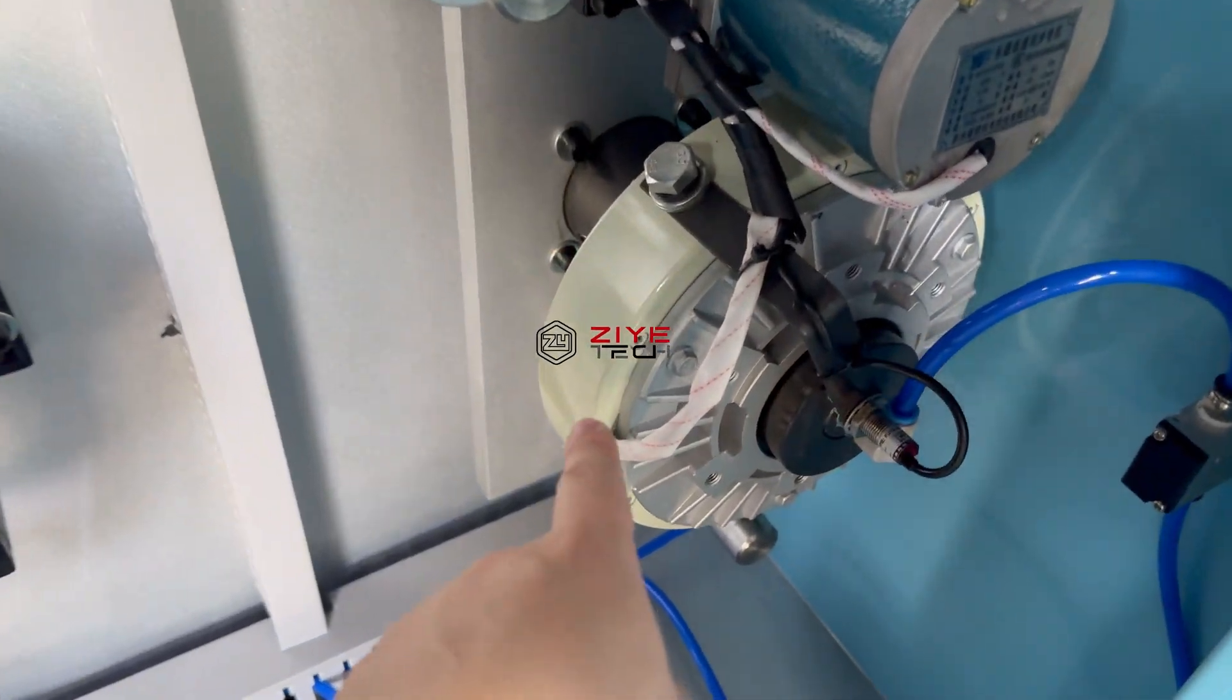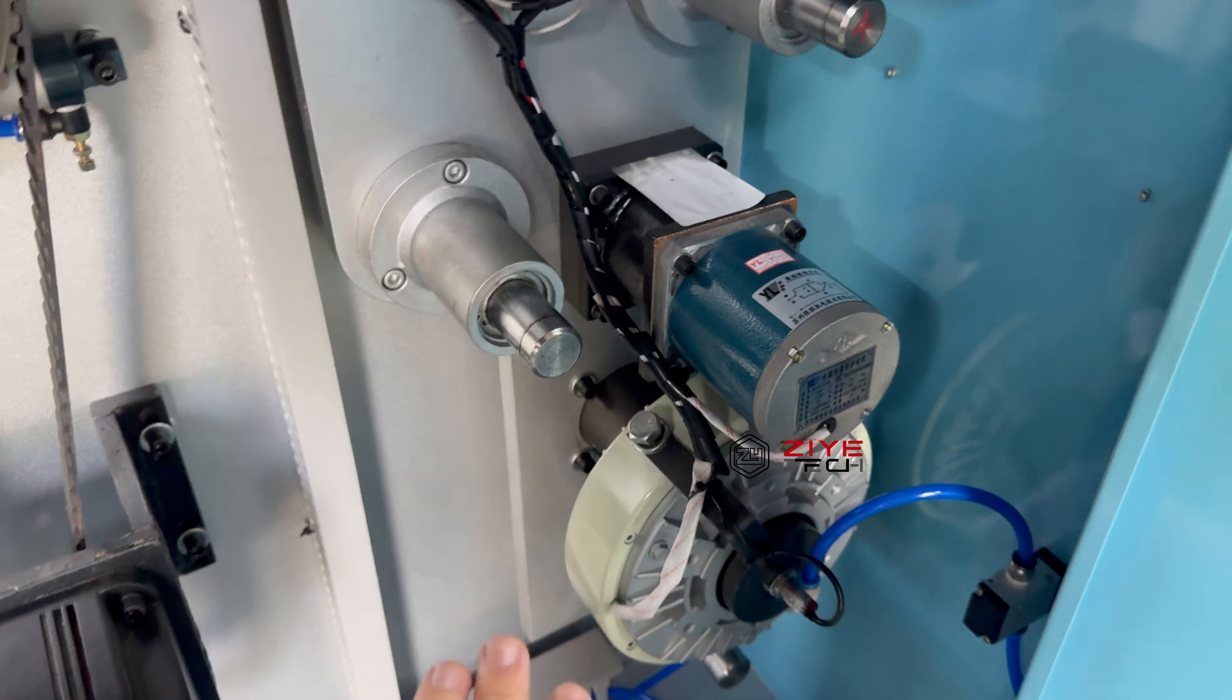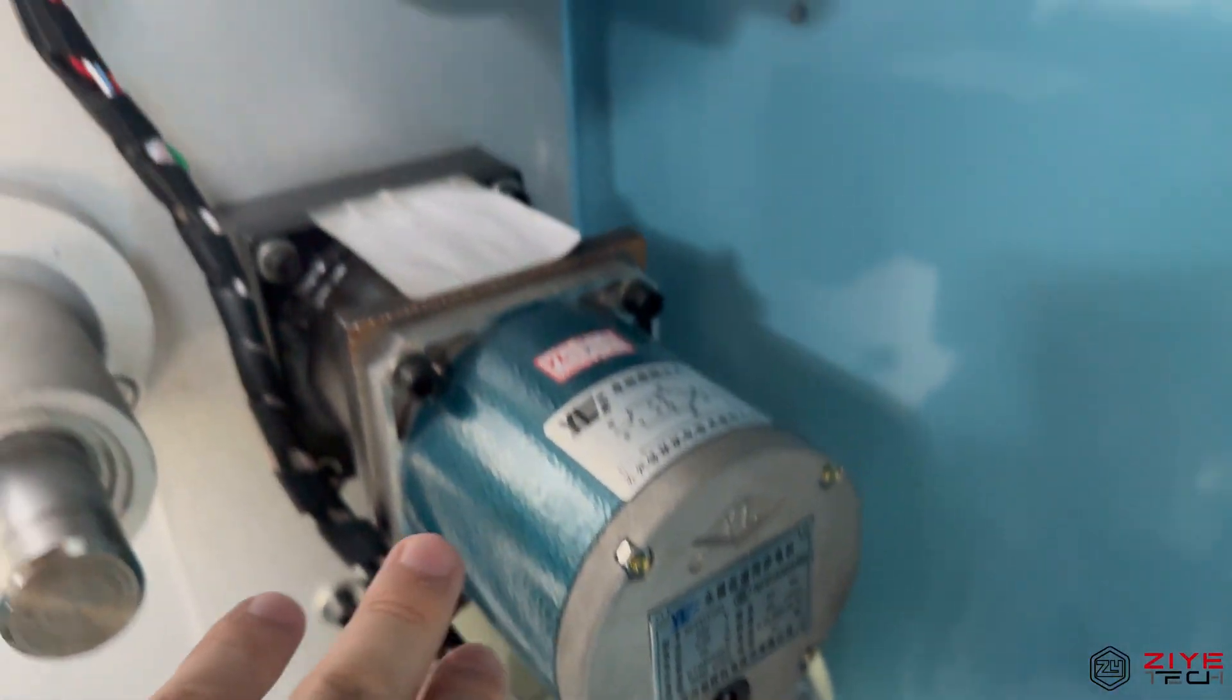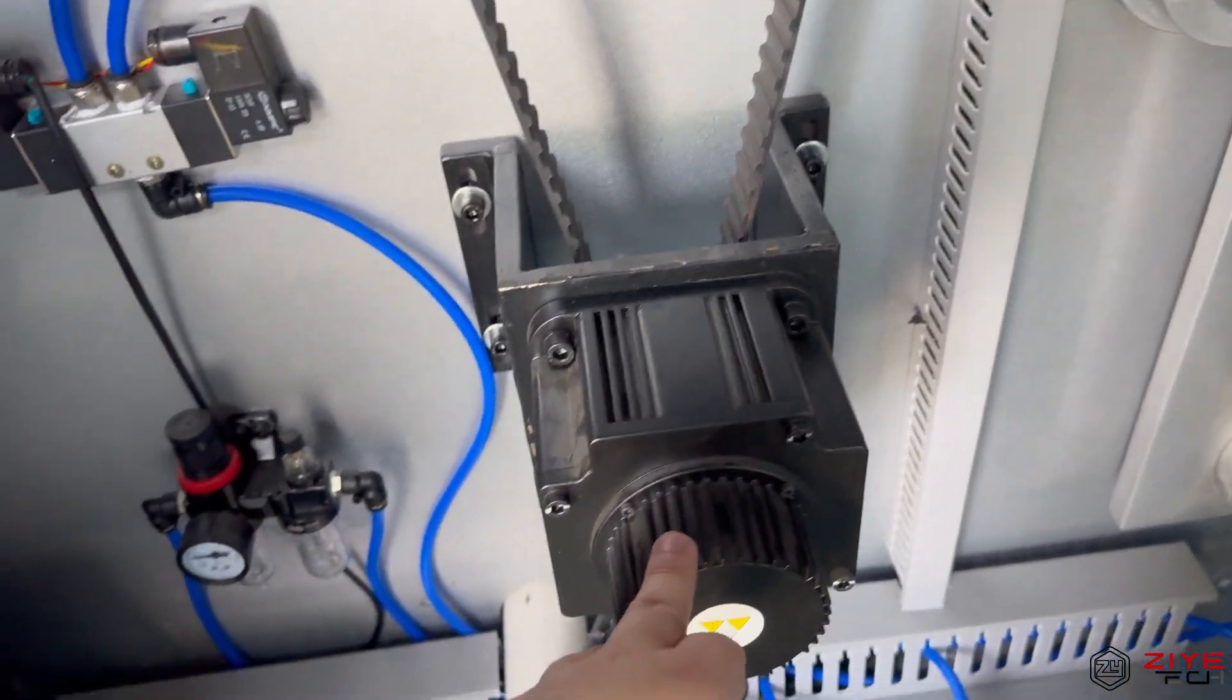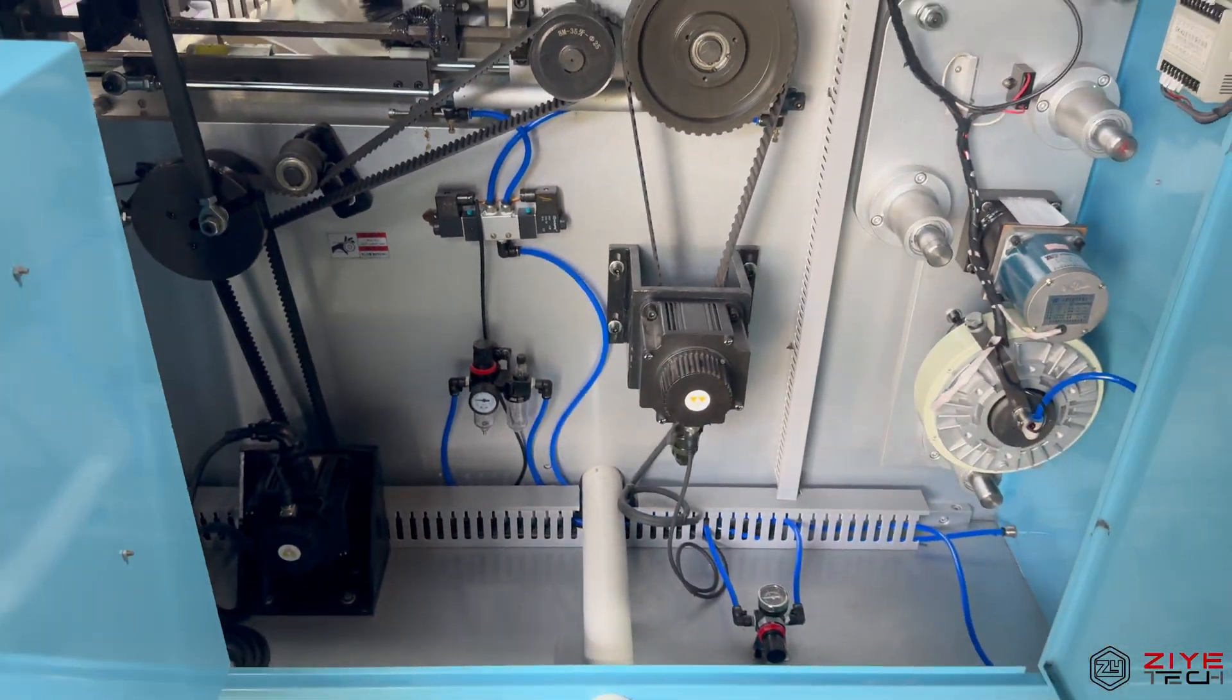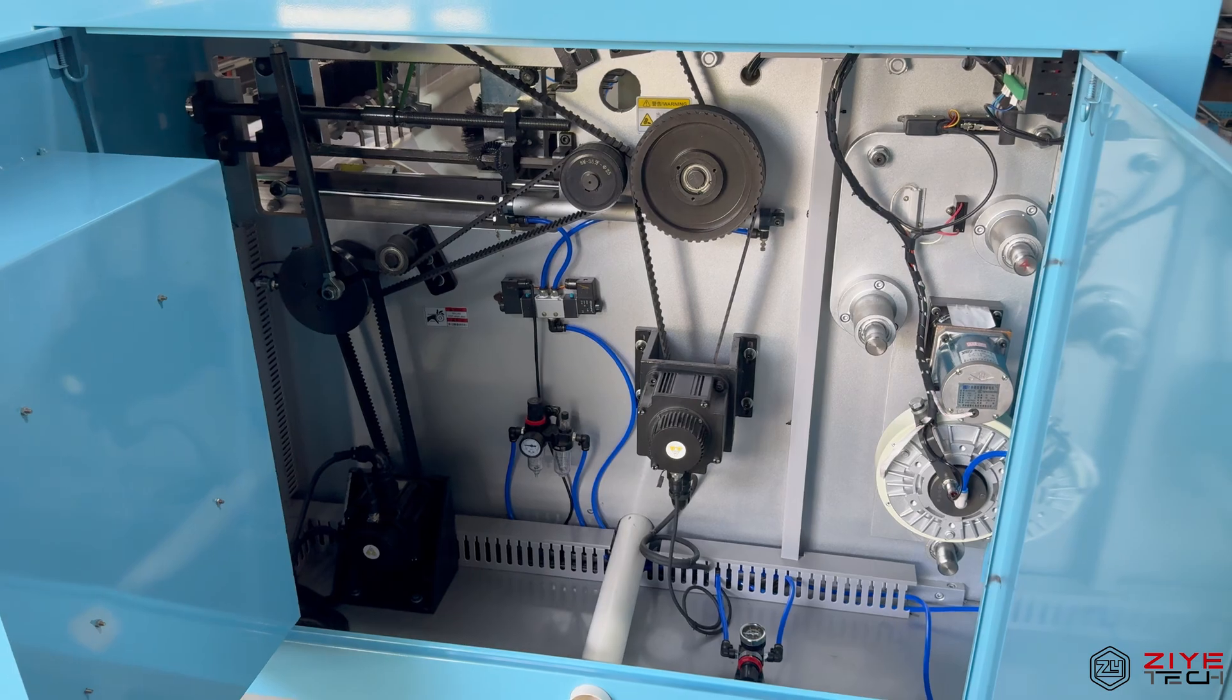There's the Magnetic Brake to control the Tension of the Unwind. This is the Webeguide System Motor. One Submotor, Second Submotor. Totally two Submotors. As you can see the backside, it's very clean.